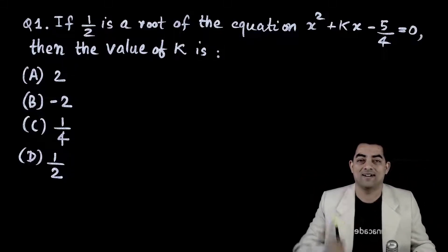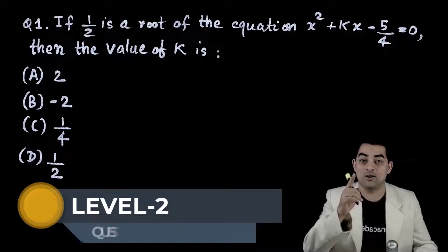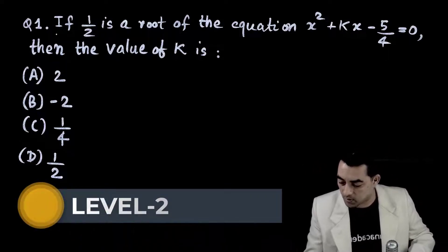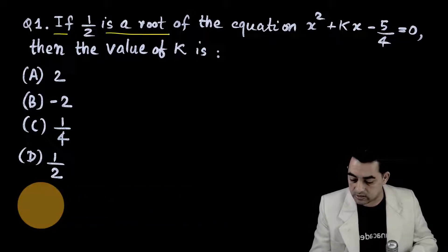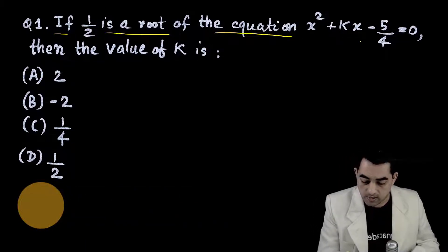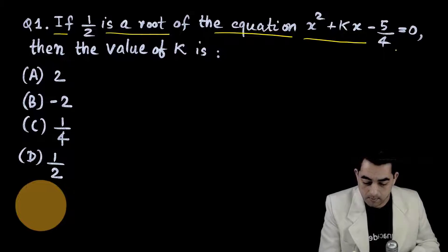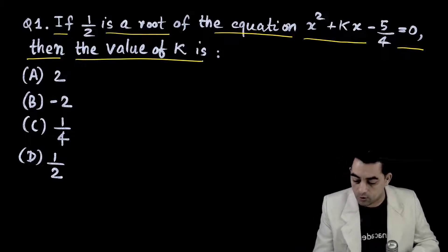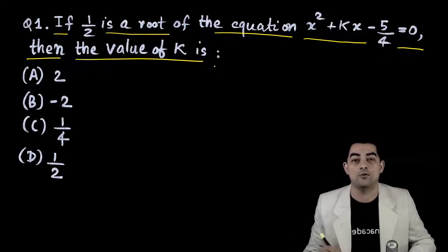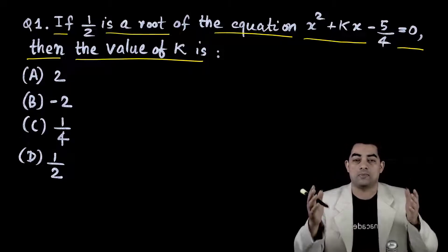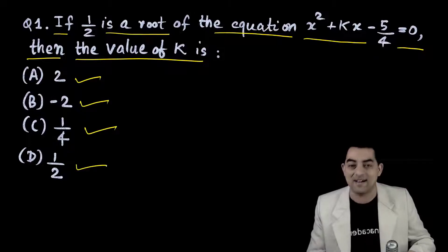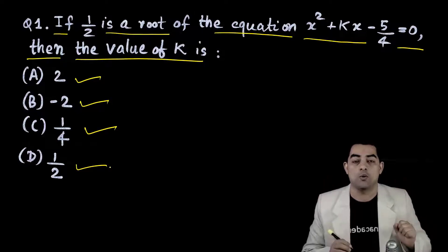Welcome back! Today we are doing Level 2 Quadratic Equations. Question number 1: if 1/2 is a root of the equation x² + kx - 5/4 = 0, find the value of k. Options: a = 2, b = -2, c = 1/4, d = 1/2.